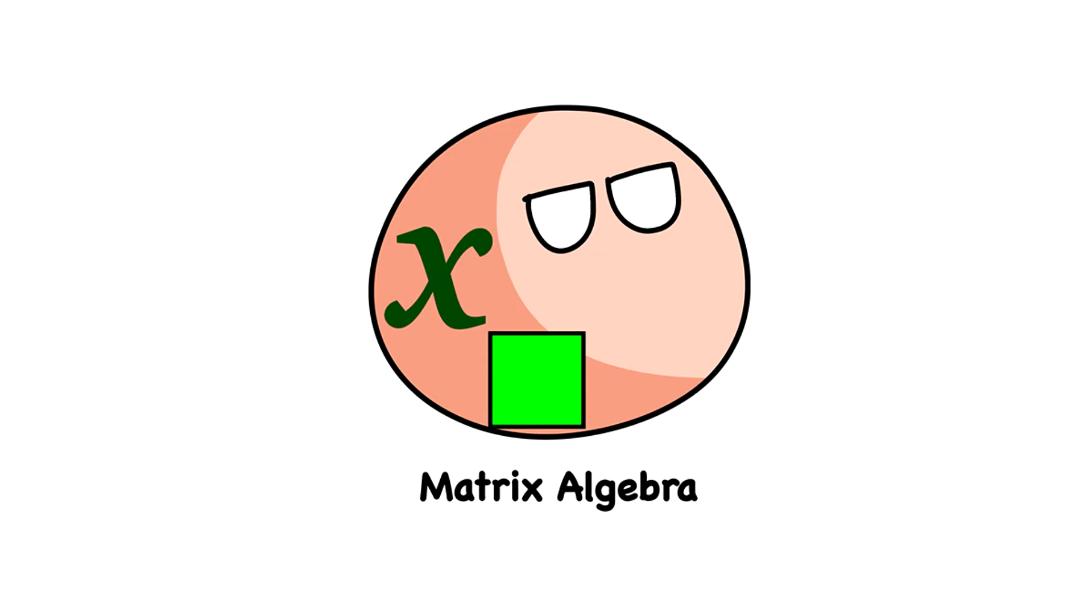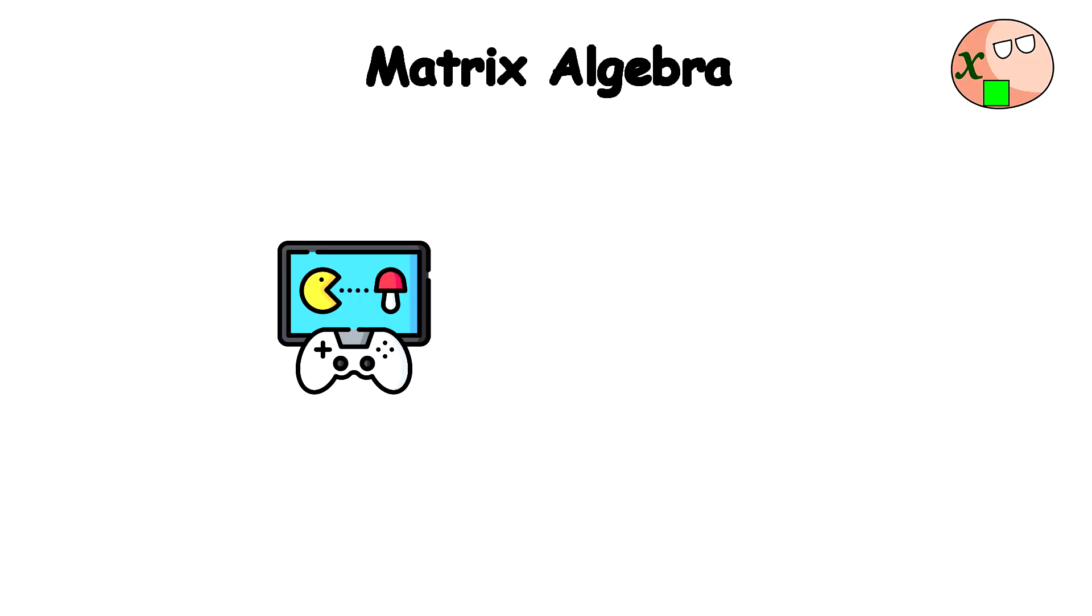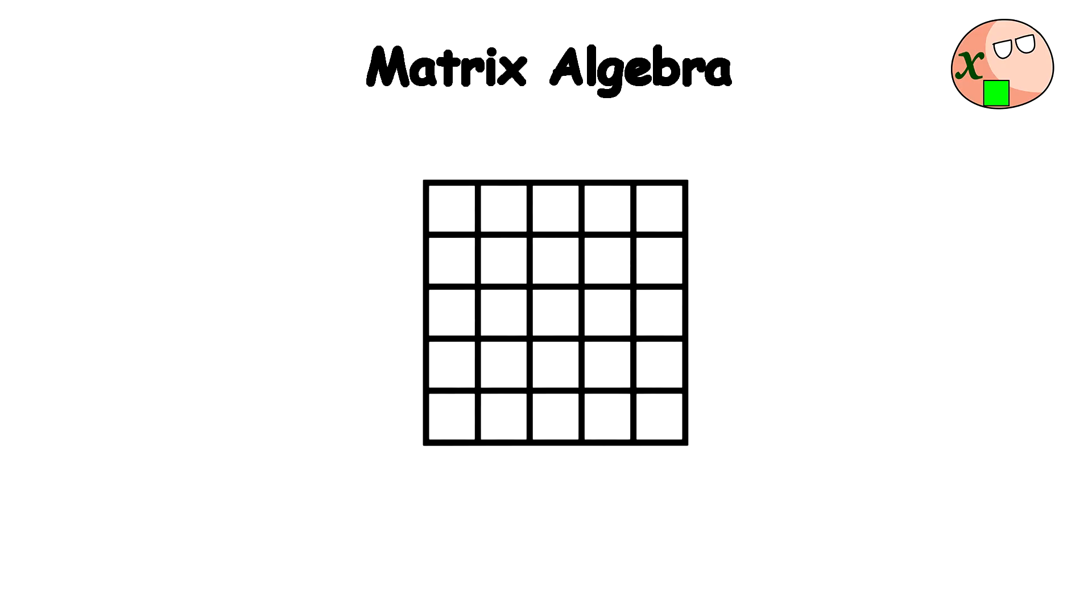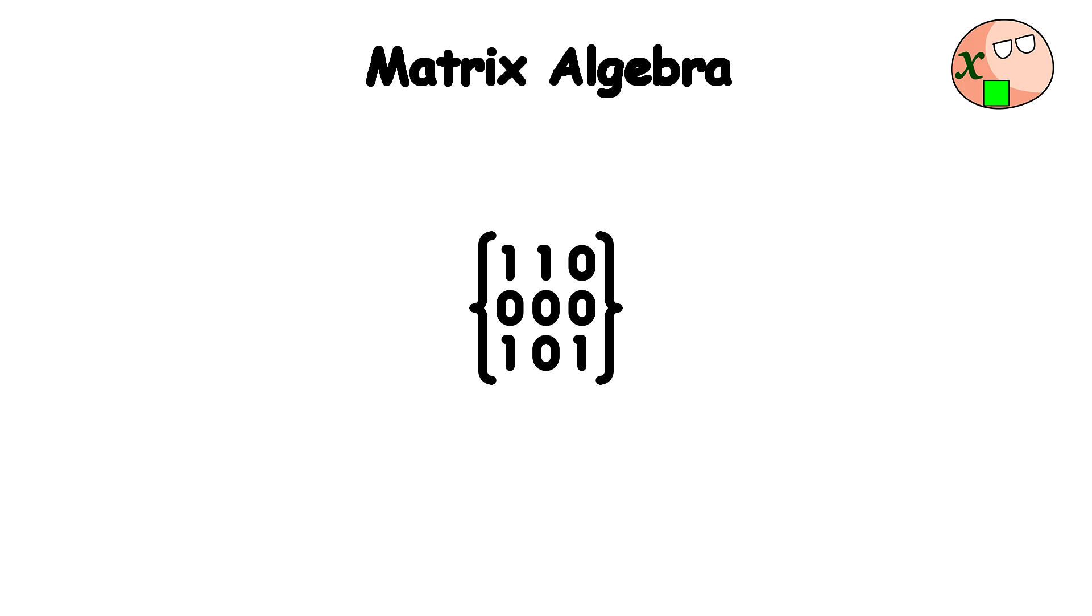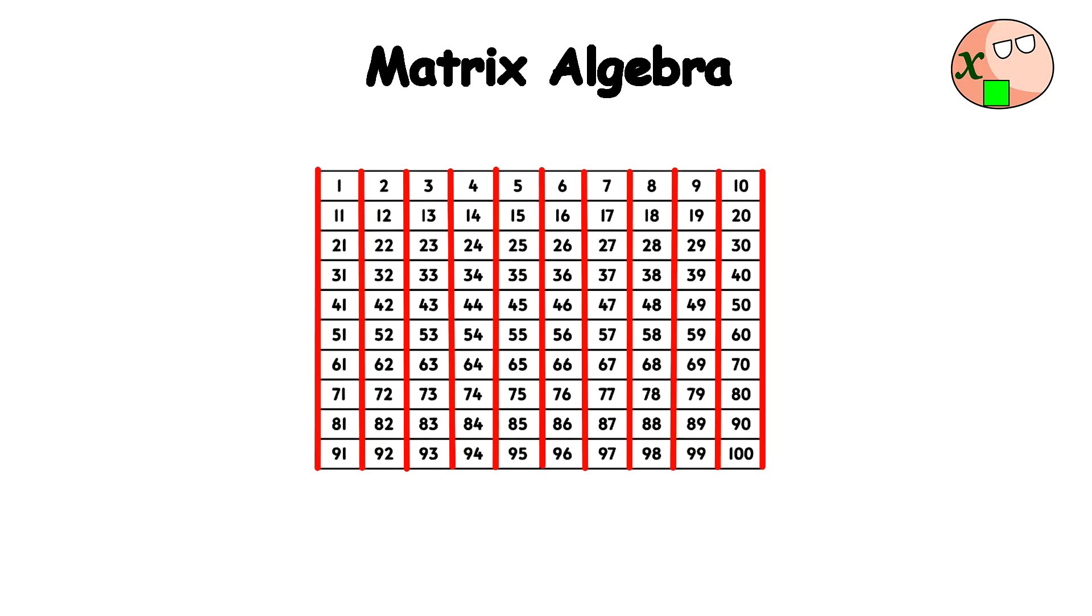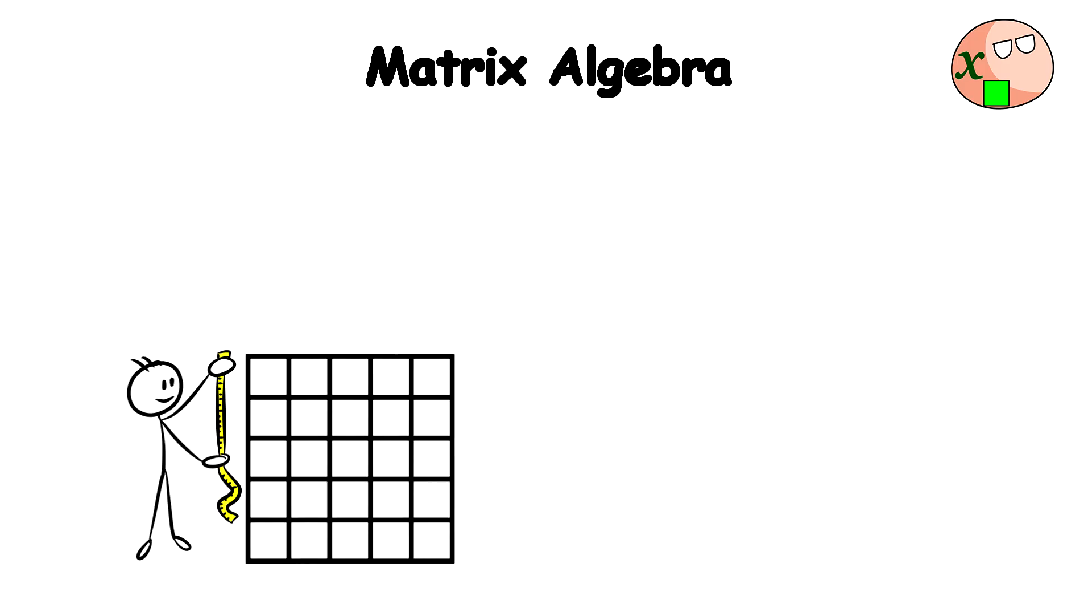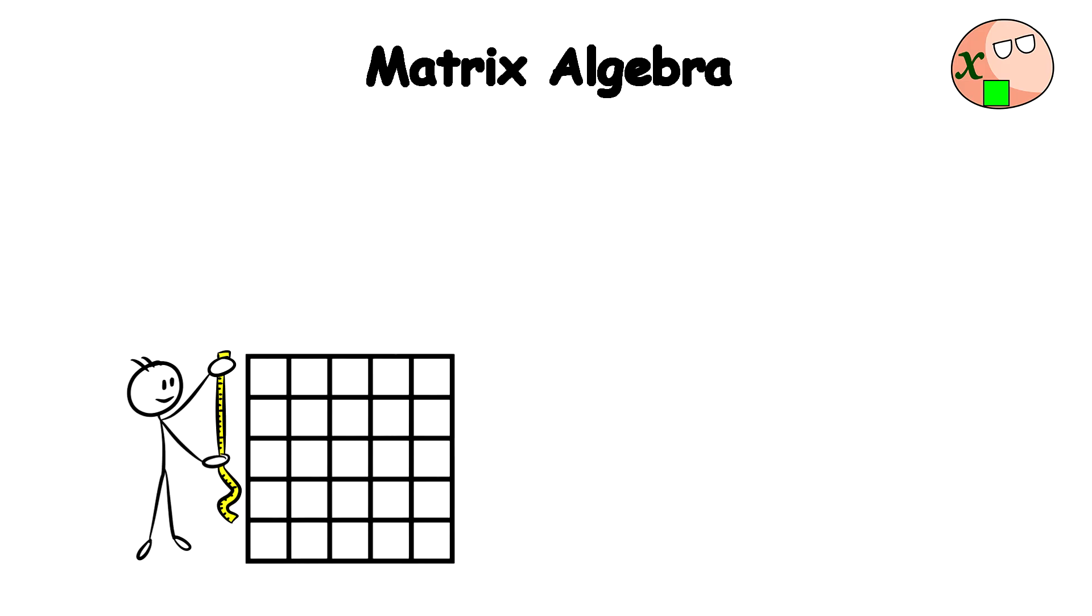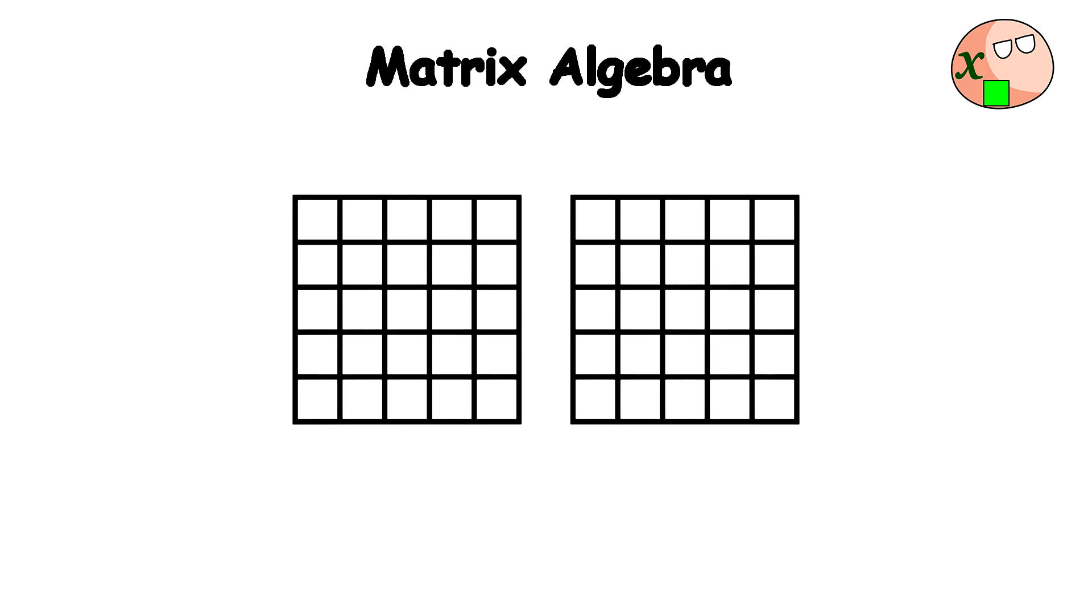Matrix Algebra. Matrix Algebra is like a special set of rules for playing with grids full of numbers. These grids are called matrices, that's the plural of matrix, and they're just rectangles filled with numbers and rows, the horizontal lines, and columns, the vertical lines. Here's how it works. Size of a matrix. This tells you how big the grid is. For example, a 3x2 matrix has 3 rows and 2 columns, making a rectangular shape. Adding matrices. If you have two grids of the same size, you can add them together by adding the numbers that are in the same spot in each grid.